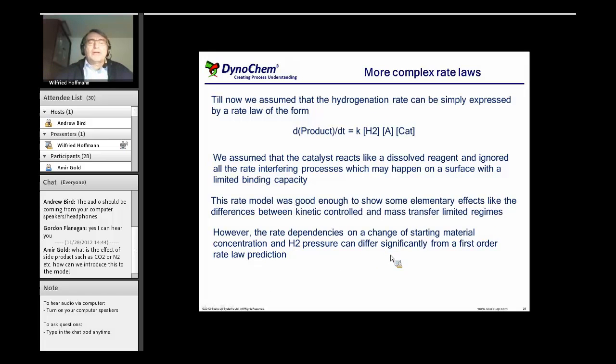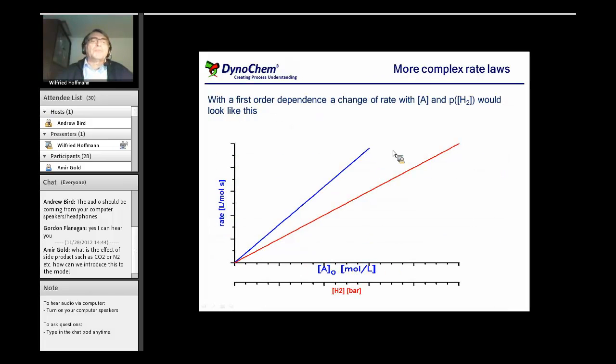This is what we can expect when everything is first-order. You see we have a linear increase of hydrogen concentration and a linear increase of starting concentration will give a linear increase in the rate of the overall reaction.